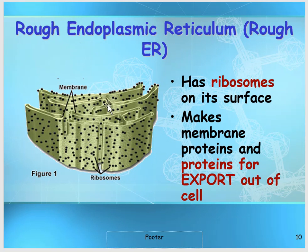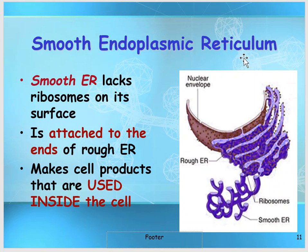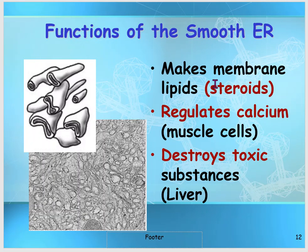The next organelle is the rough endoplasmic reticulum, or rough ER. The rough ER is spaced out right next to the nucleus, and the black dots you see are ribosomes attached to it — making the surface appear rough, which is why it's called rough ER. The second type is the smooth ER, located adjacent to the rough ER. The smooth ER is responsible for making membrane lipids and steroids, regulating calcium in muscle cells, and destroying toxic substances, especially in the liver.